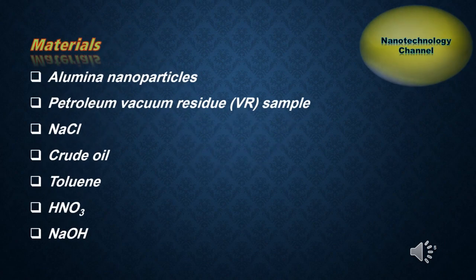This is the list of the materials that you need: aluminum nanoparticles, petroleum vacuum residue or VR sample, sodium chloride, crude oil, toluene, nitric acid, and sodium hydroxide.